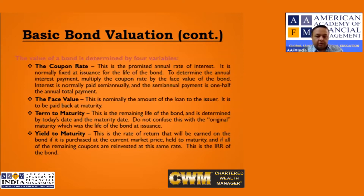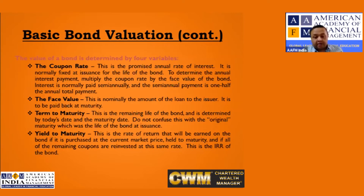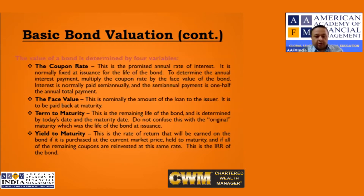Term to maturity is the remaining life of the bond. For example, if a bond was issued for 10 years and five years have already passed, the term to maturity is five years, not ten years. Do not confuse term to maturity with the original maturity, which is the life of the bond at issuance. Term to maturity refers specifically to the remaining life of the bond.